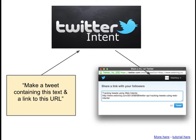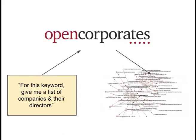APIs don't always have to return data — you can also use APIs to create things. For example the Twitter intent API can be used to create a tweet: you supply it with the information, such as the text you want in the tweet and a link to a URL, and you will be given a tweet ready to publish. The OpenCorporates API will give you data on companies — you can ask a query like: for this particular word, give me a list of all the companies that contain that word and the directors — and you'll get a result which could look like a network graph or some more complex data.